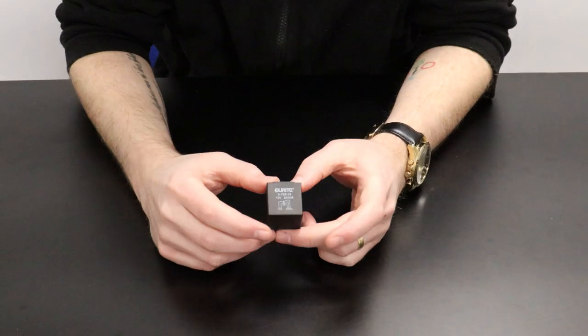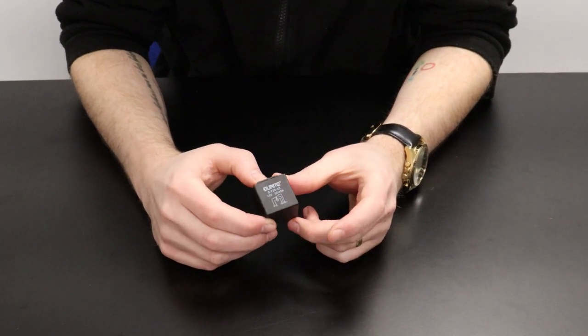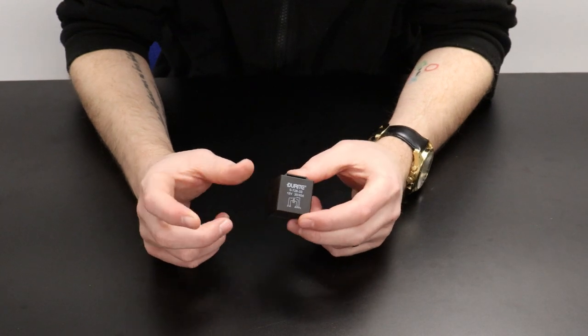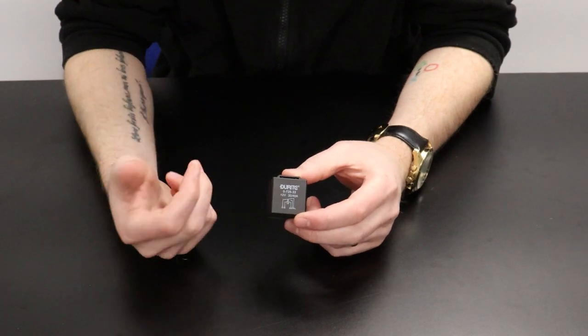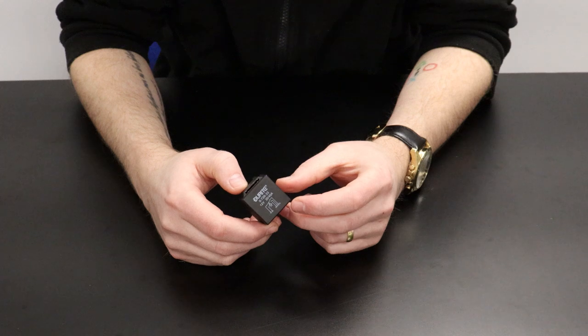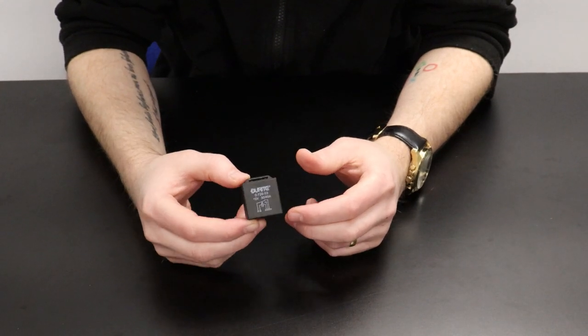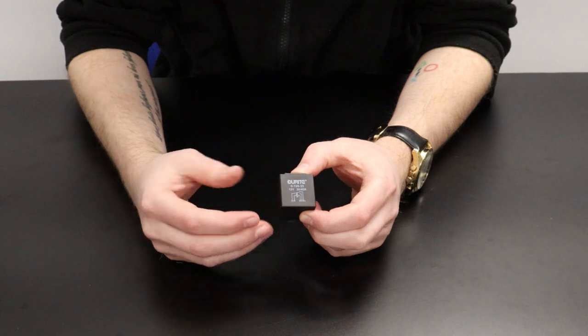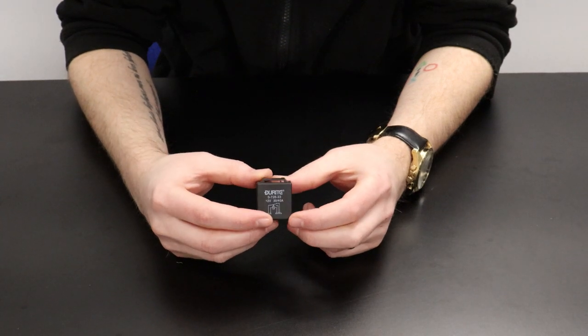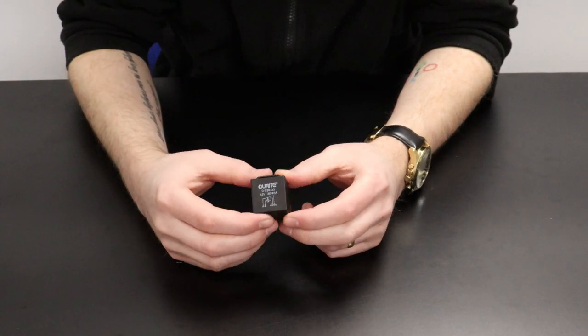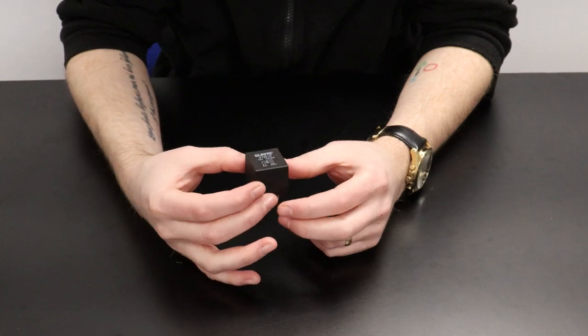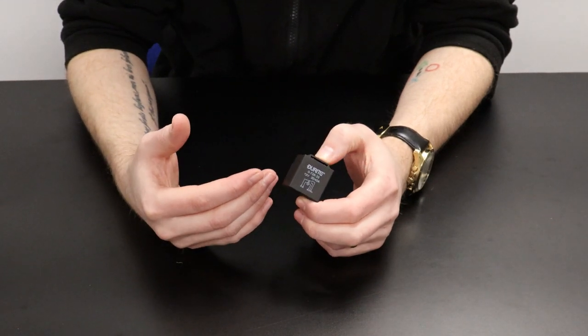Next are changeover relays. These have two output terminals that can connect to the common input terminal which is terminal 30. One of which is normally closed and one that is normally open. So when the coil is at rest, terminal 30 is connected to 87A and when the coil is energized, terminal 30 is connected to terminal 87.